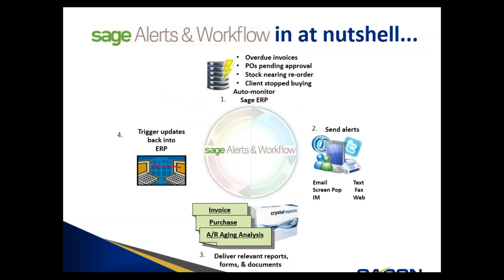Now let's peek under the hood of Sage Alerts and Workflow. There are four components. The first component is the ability to monitor your Sage 300 system. For example, should you want Sage Alerts and Workflow to monitor an email inbox — many companies have generic email addresses such as info@mycompany.com, sales@, or finance@ — Sage Alerts and Workflow can continuously monitor those email inboxes, look for specific conditions, and take action. It's completely user-definable.